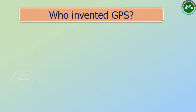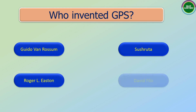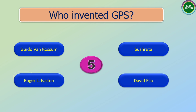Next question: Who invented GPS? The options are: Yodo Van Roosem, Sustra, Roger L. Easton, David Filo. And the correct answer is Roger L. Easton.